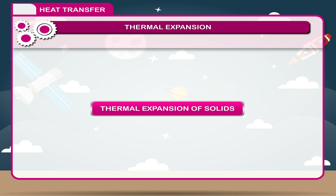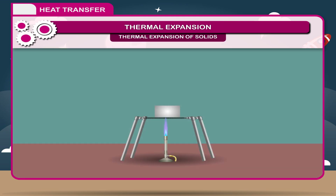Thermal expansion of solids: When a substance is heated, it absorbs heat and starts expanding. Most metallic solids expand on heating. Gases expand the most and solids expand the least on heating. Unlike gases or liquids, solid materials tend to keep their shape when undergoing thermal expansion. Thermal expansion generally decreases with increasing bond energy, which affects the melting point of solids. So high melting point materials have lower thermal expansion.